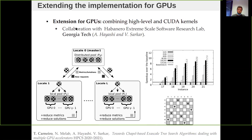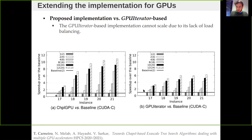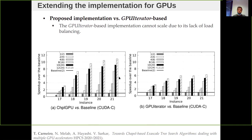This work is a cooperation between INRIA Lille and the Habanero Extreme Scale Software Research group at Georgia Tech, with Professor Vivek Sarkar and Akihiro Hayashi. The GPU-iterator-based application without load balancing can only reach 60% linear speedup on 48 GPUs, whereas our scheme achieves 90% linear speedup.